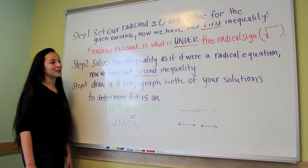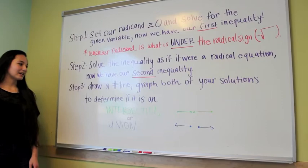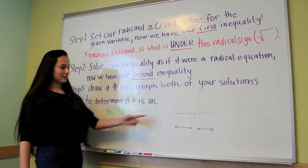Remember that the radicand is what is under the radical sign. Step 2 is to solve the inequality as if it were a radical equation. Now we have our second inequality. Step 3 is to draw a number line and graph both of your solutions to determine if it's an intersection or a union. These are what your graphs will look like depending on which one it is.